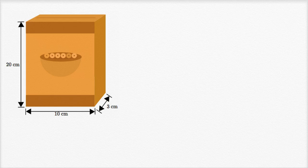Let's see if we can figure out the surface area of this cereal box. There are a couple of ways to tackle it. The first way is to figure out the surface area of the sides that we can see, then think about what the surface area of the sides we can't see are and how they relate, and then add them all together. So let's do that.